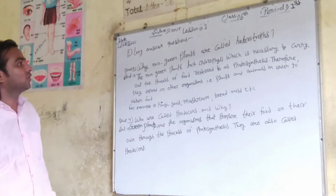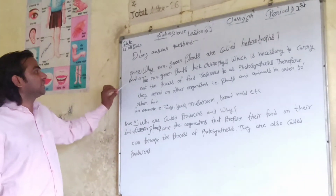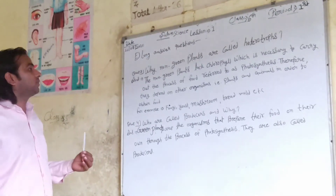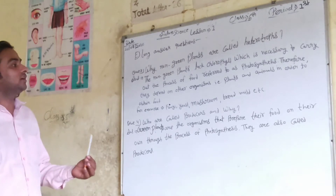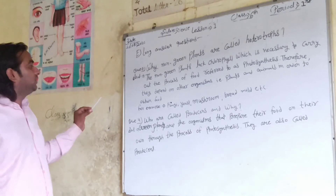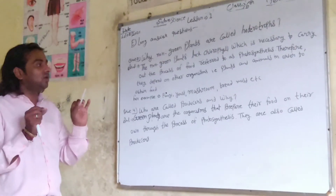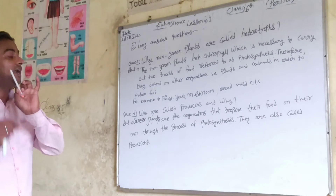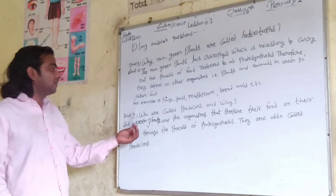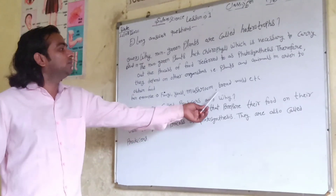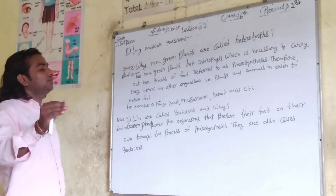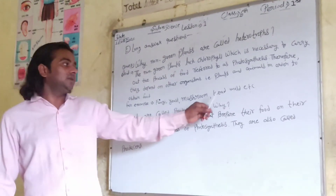Why are non-green plants called heterotrophs? Non-green plants lack chlorophyll, which is necessary to carry out the process of photosynthesis. Therefore, they depend on other organisms for food. Examples include fungi, yeast, mushroom, bread mold, and other non-green plants. These are all non-green plants.